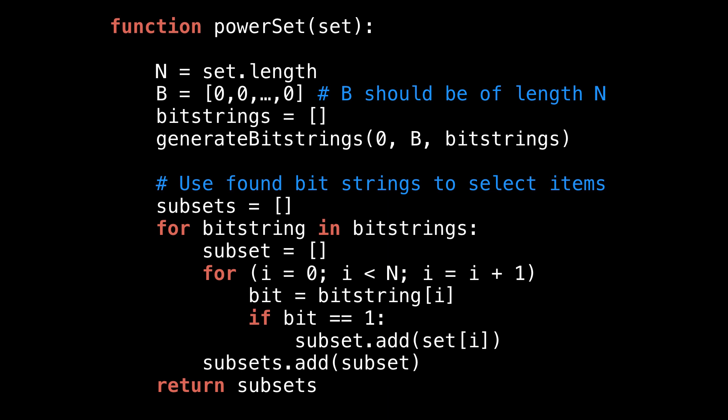All we do is loop through each bit string array. And for each bit string array, check if the bit for each particular element is set to one, and if so, add it to the current subset. We do this adding subsets to our subsets array, which we ultimately return as the power set.